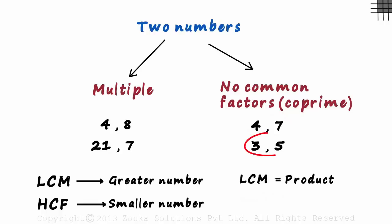And for the second pair, the LCM will equal 3 times 5 which equals 15. And what will be the HCF of such numbers?